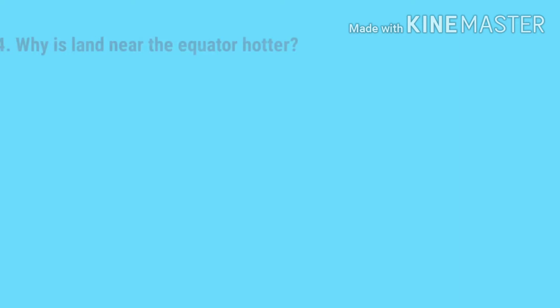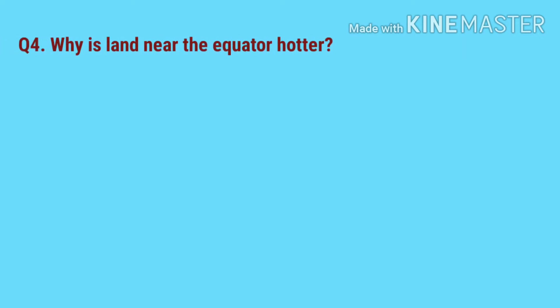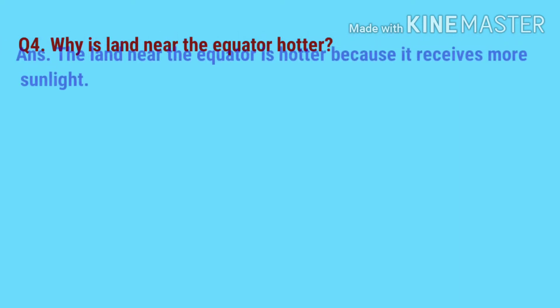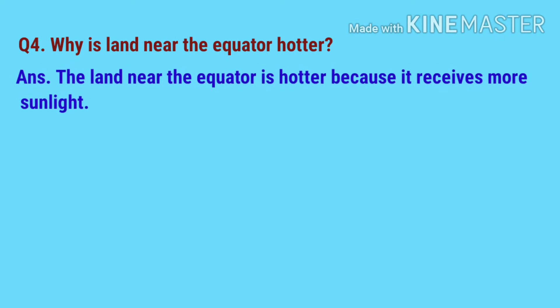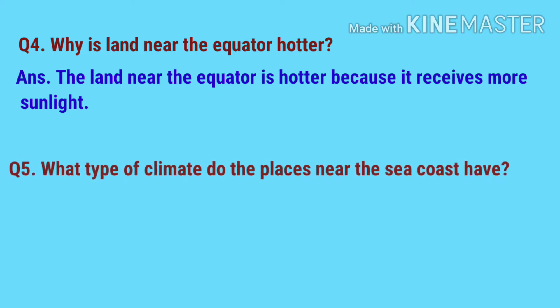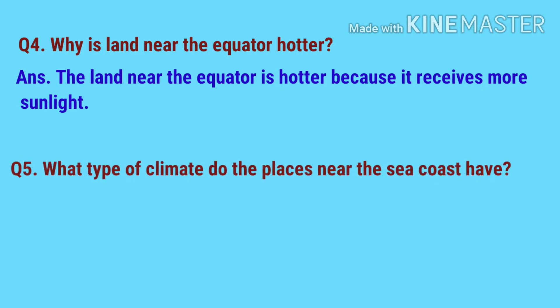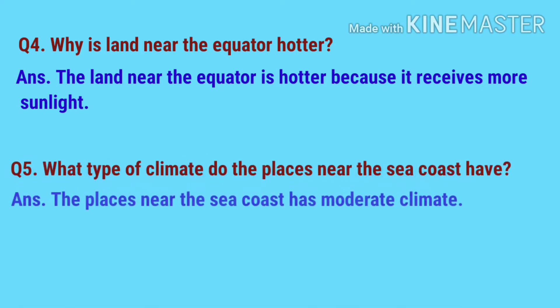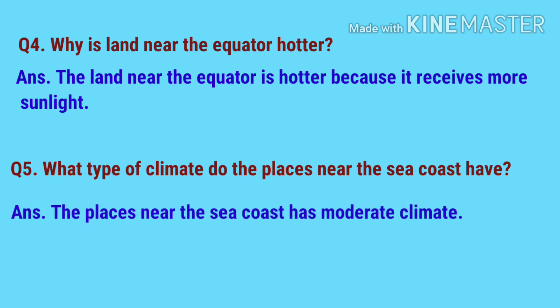Question number four: why is land near the equator hotter? The land near the equator is hotter because it receives more sunlight. Question number five: what type of climate do the places near the sea coast have? The places near the sea coast have moderate climate.